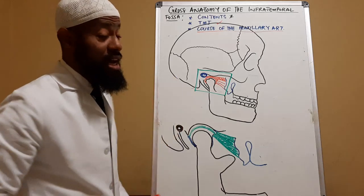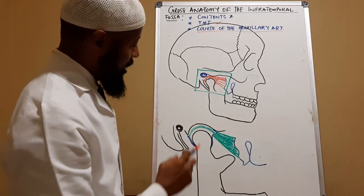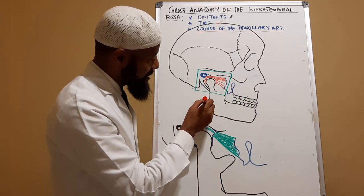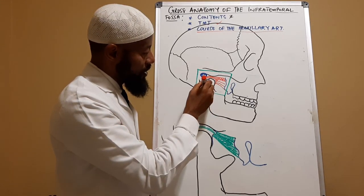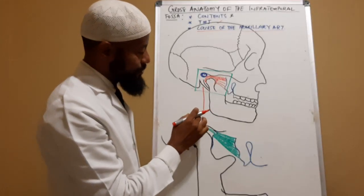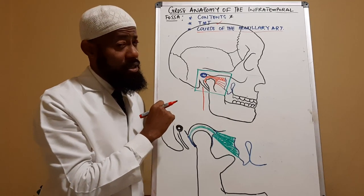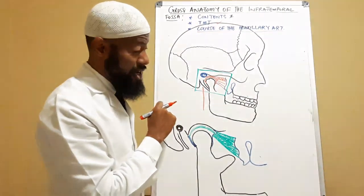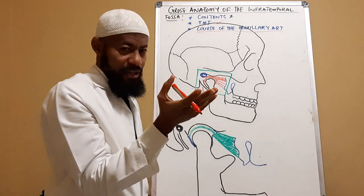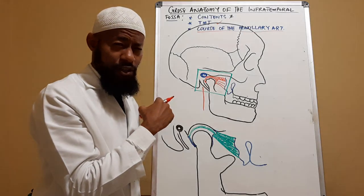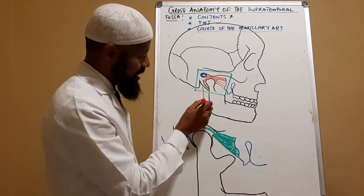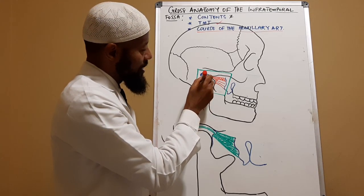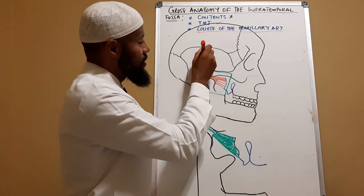Looking at this diagram, the external carotid artery gives branches all the way as it begins to travel superiorly. It branches from the common carotid artery, which gives two branches: the external carotid artery and the internal carotid artery. The external carotid artery travels upward, giving the superficial temporal artery, and at the neck of the mandible, it gives the maxillary artery.